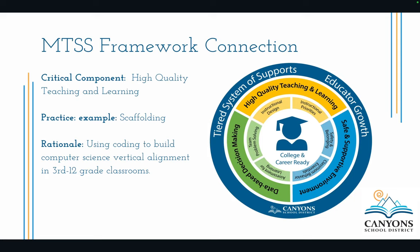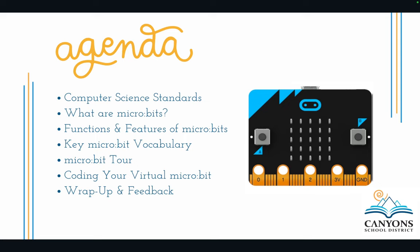Our rationale is that we are using coding to build computer science vertical alignment in grades 3 through 12. Our agenda is that we are going to look at the computer science standards, focusing on what is a micro:bit, the functions and features of the micro:bits, key vocabulary, a tour of MakeCode, and then we're going to do some coding.